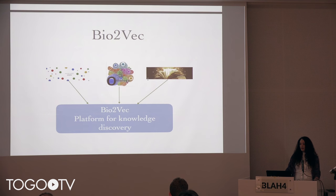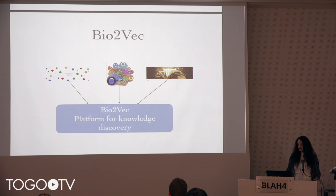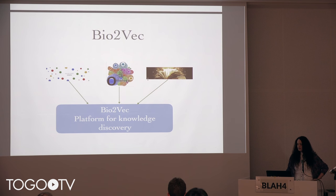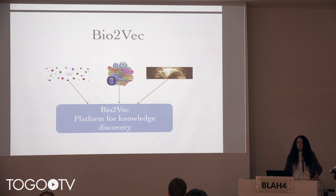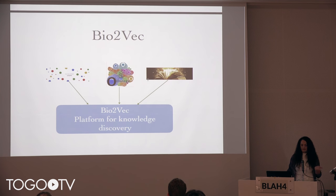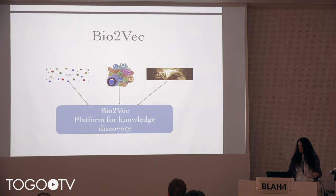Motivated by this, we propose a platform called Bio2Vac. We try to integrate the knowledge graph, ontologies, and literature. We hope that this platform will facilitate knowledge discovery. In more detail, we get data from knowledge graphs, use Bio2Vac to create embeddings, and do the same for ontologies and literature.